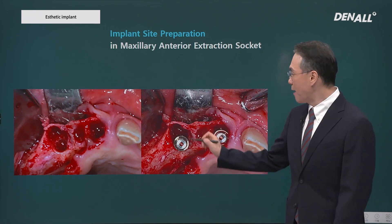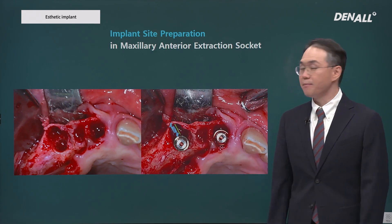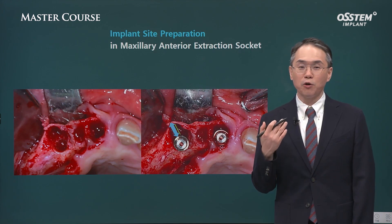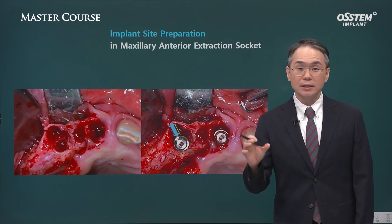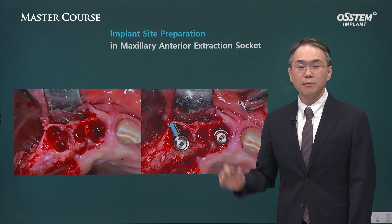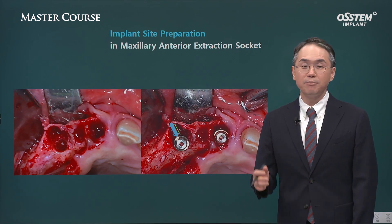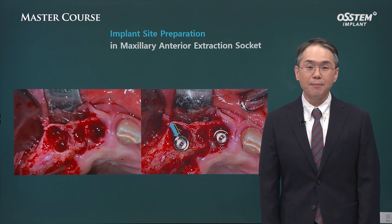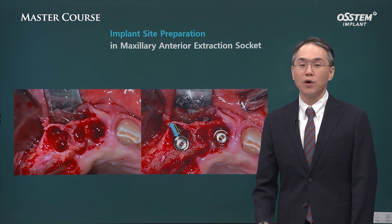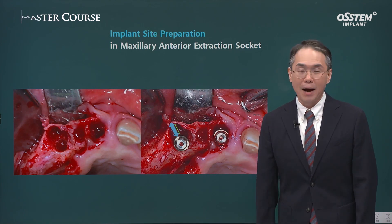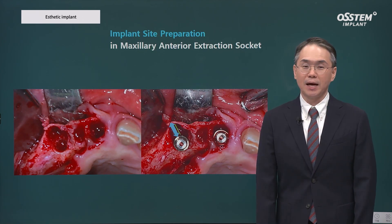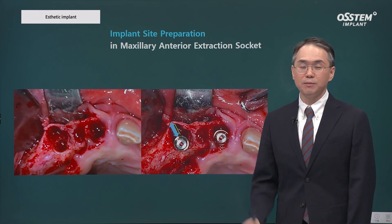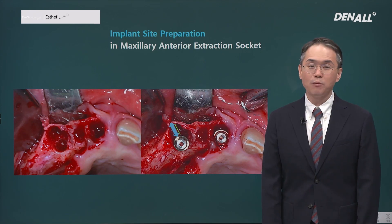If you place the implant as mentioned, there is going to be a gap between the implant and the labial wall. You need to manage this gap properly. If the implant is placed too buccally, the amount of this gap is going to be reduced. If that happens, the space for graft material also becomes reduced and we would not be able to make the labial wall around the implant thick. In the end, we would not be able to prevent labial gingival recession, and it will be aesthetically unfavorable.